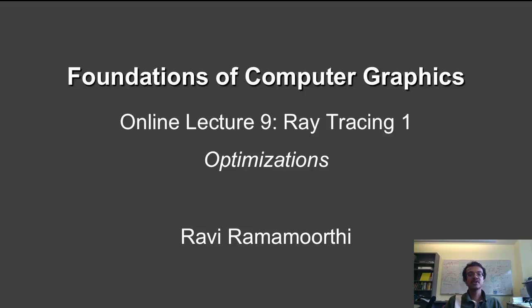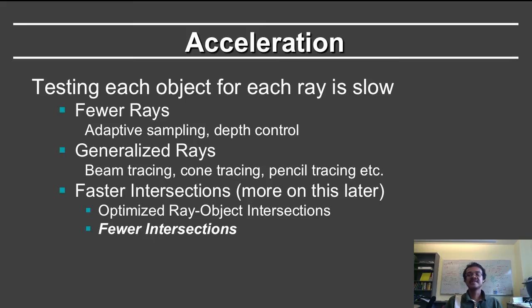In this final segment for the first ray tracing lecture, we are going to consider optimizations and acceleration. Testing each object for each ray is slow. This is one of the causes why ray tracing has historically been slow.